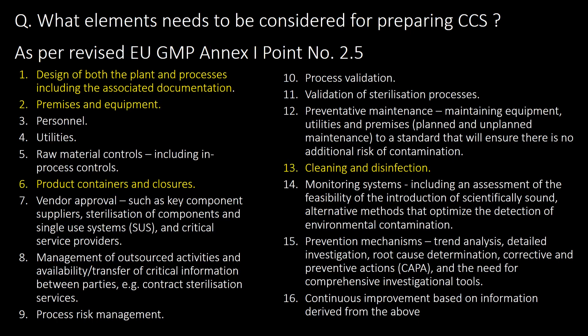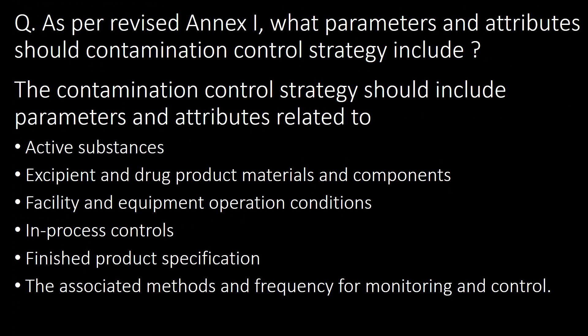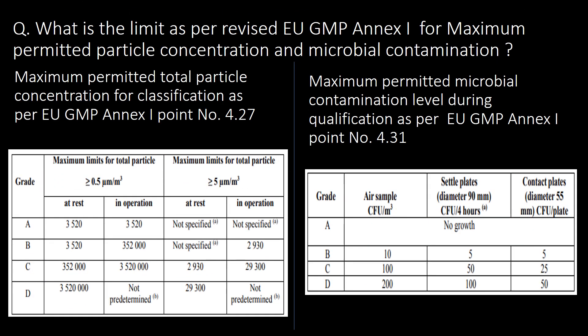As per revised Annex 1, what parameters and attributes should a contamination control strategy include? The contamination control strategy should include parameters and attributes related to active substances, excipients and drug product materials and components, facility and equipment operation conditions, in-process controls, finished product specifications, and the associated methods and frequency for monitoring and control.